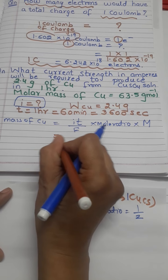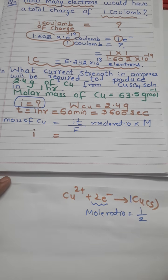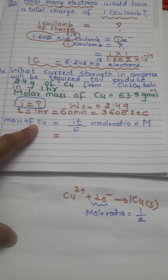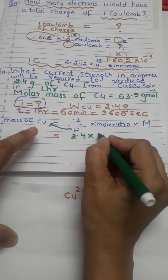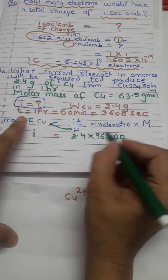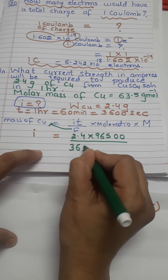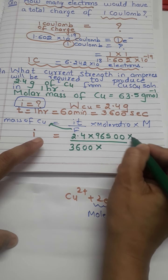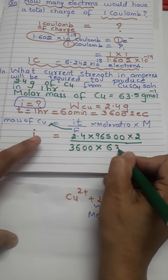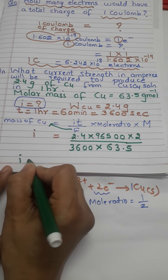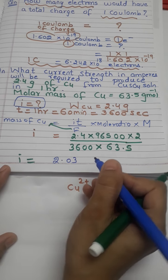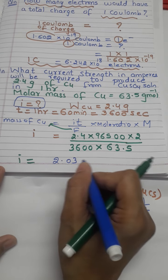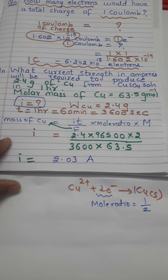Substituting values: I = mass of copper × F / (T × 2 × molar mass). Mass of copper is 2.4, F is 96500, time is 3600, mole ratio gives 2 in the numerator, and molar mass of copper is 63.5. Solving using logarithm or tables, the current is 2.03 amperes. So we have solved the second numerical.